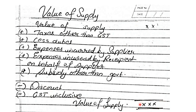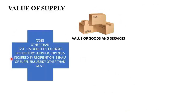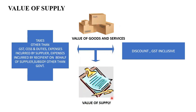To put this in graphical point of view: value of supply is the value of goods and services, to which you add all taxes other than GST, all cesses and duties, all expenses incurred by the supplier and by the recipient on behalf of the supplier, and all subsidies other than government. You then subtract any discount or GST inclusive if any. Whatever final bill comes up is your value of supply.